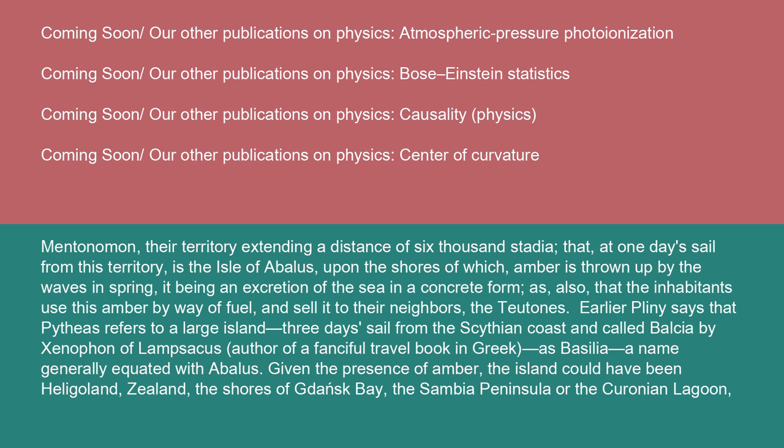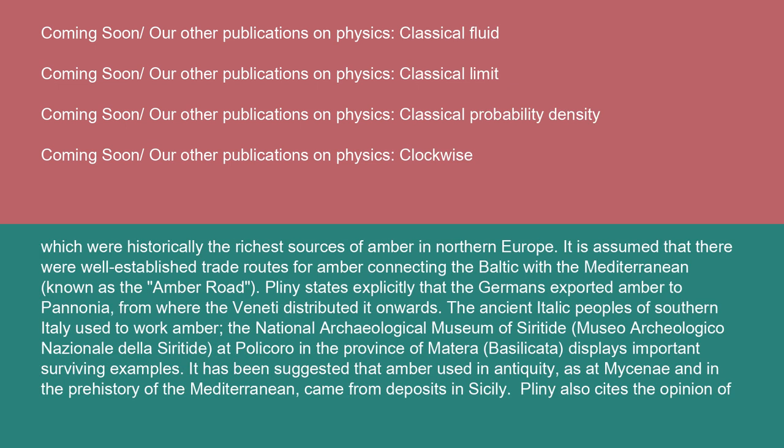Given the presence of amber, the island could have been Heligoland, Zeeland, the shores of Gdansk Bay, the Sambia Peninsula, or the Curonian Lagoon, which were historically the richest sources of amber in northern Europe. It is assumed that there were well-established trade routes for amber connecting the Baltic with the Mediterranean, known as the Amber Road. Pliny states explicitly that the Germans exported amber to Pannonia, from where the Veneti distributed it onwards.